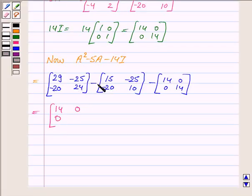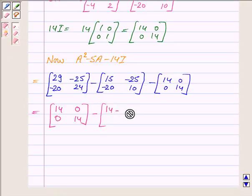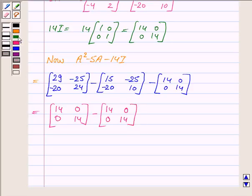We have subtracted 5A from A squared. Now this is equal to [0, 0; 0, 0]. 14 minus 14 is 0, 0 minus 0 is 0, and so on.